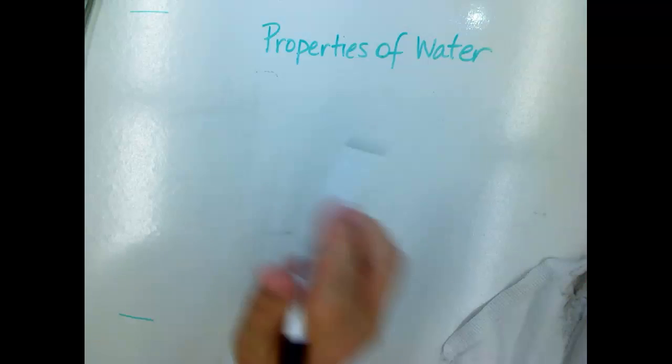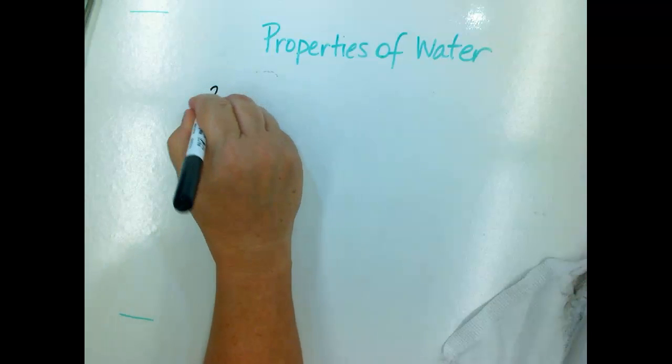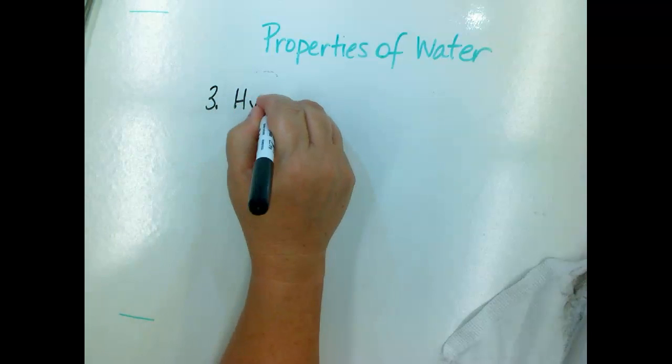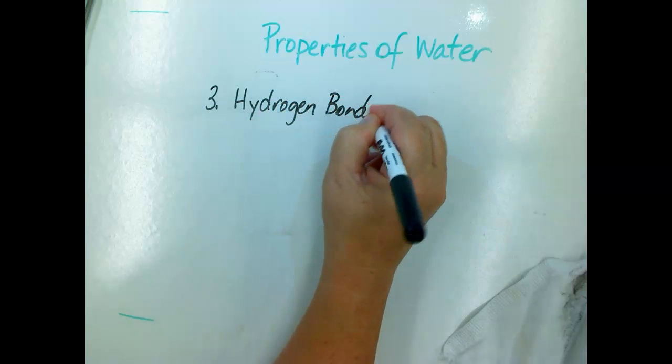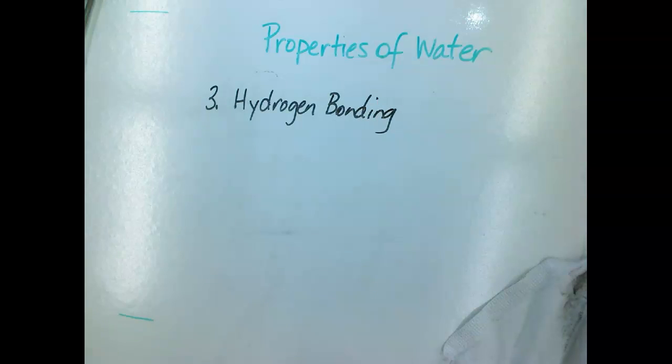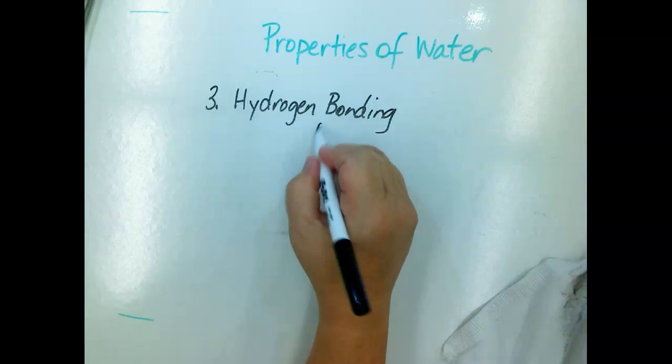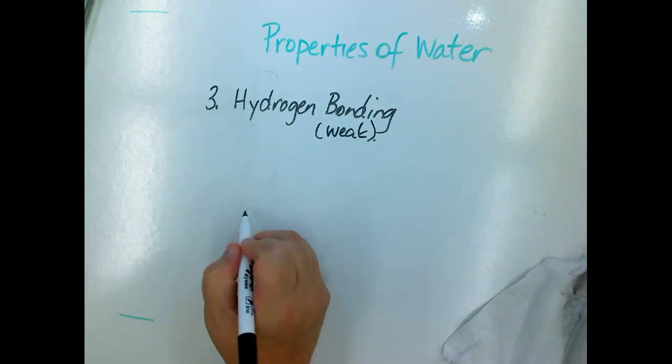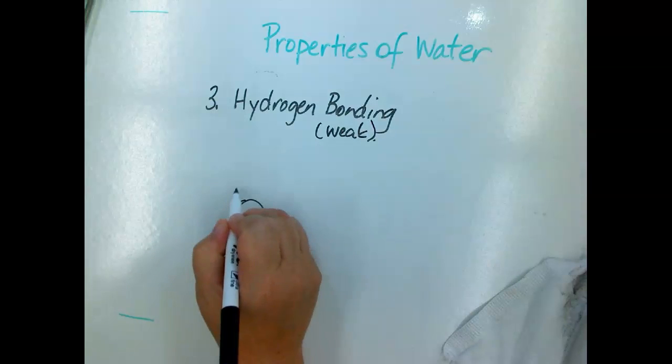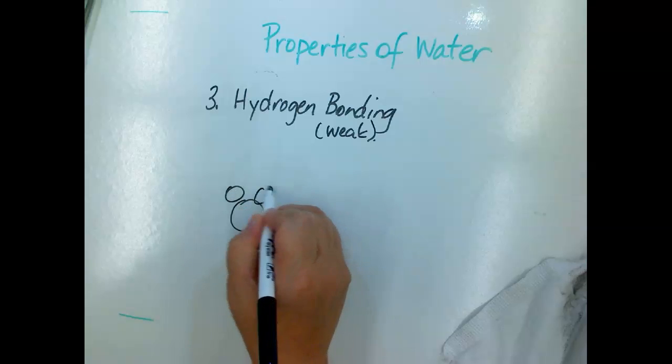The other property is that water exhibits what we call hydrogen bonding. Hydrogen bonding are super weak bonds. They're very weak. They're easily broken. But it's really important.